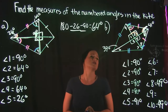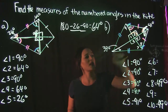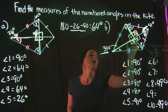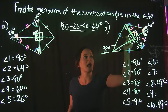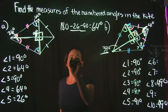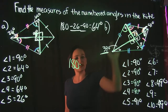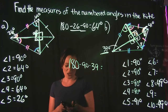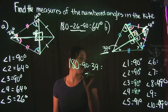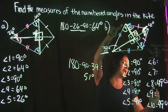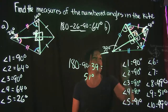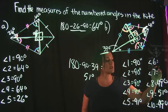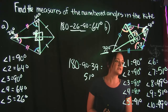Looking at the bottom two triangles, angles 1 and 3 are 90° and the given bottom angle is 39°. Focusing on one triangle: 180 − 90 − 39 = 51°, so angle 9 is 51°. Since angle 9 corresponds to angle 7 in the congruent bottom triangle, angle 7 is also 51°.